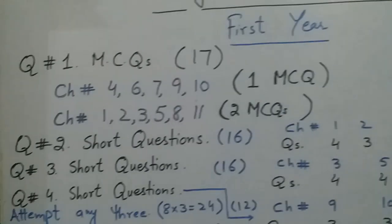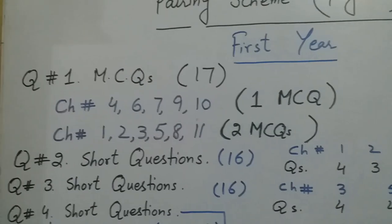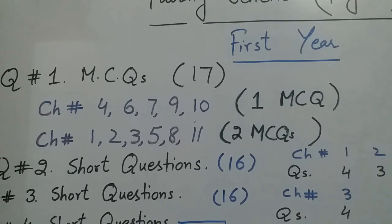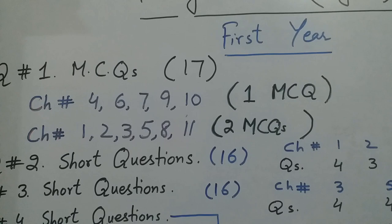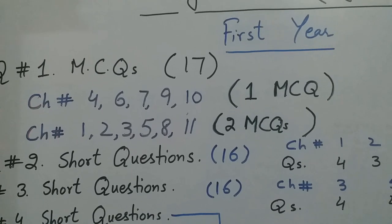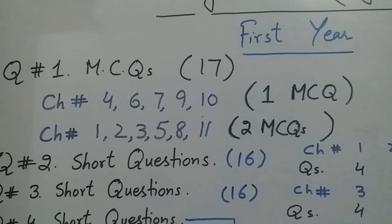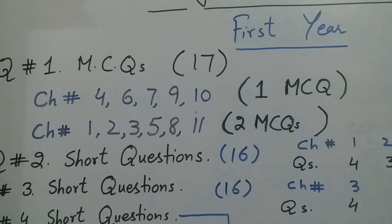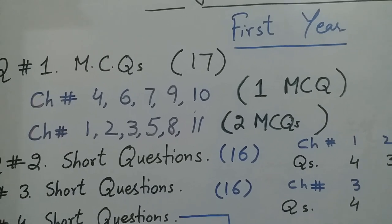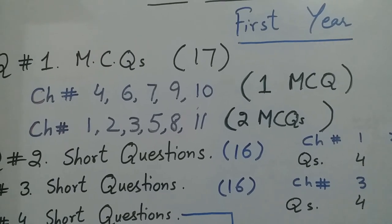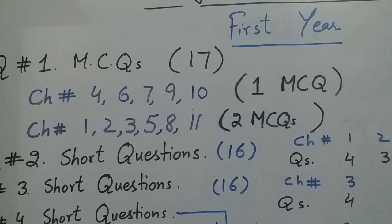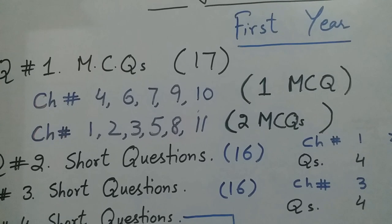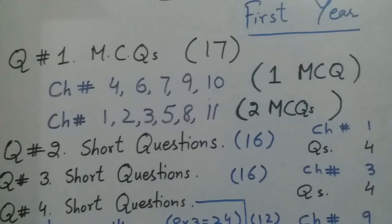For first year, question number one is MCQs, which is 17 marks. The chapters are paired — two chapters together will give two MCQs each. The paired chapters are: Chapter 1 with 6, 7 with 9, and 10 with others. Chapters 1, 2, 3, 5, 8, and 11 are also included. A total of 17 MCQs will be completed from these paired chapters.